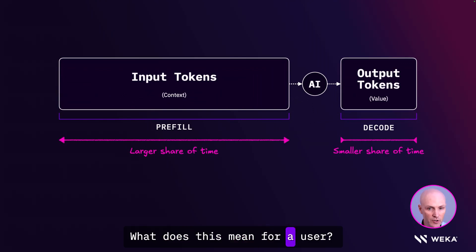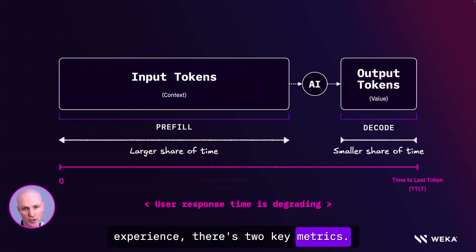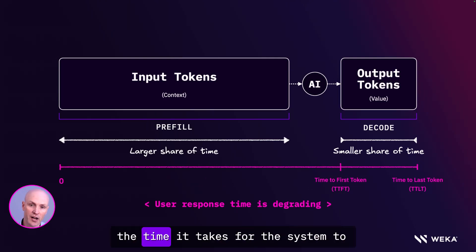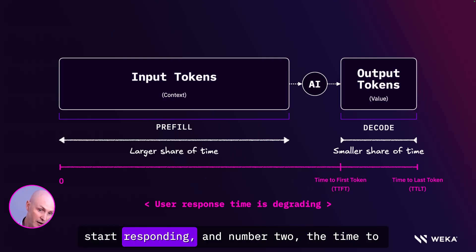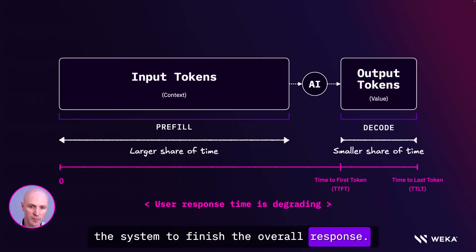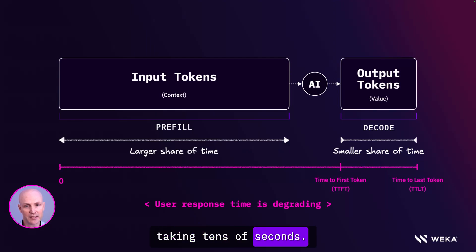What does this mean for a user? Well, other than not the best user experience, there are two key metrics. Number one, the time to first token — the time it takes for the system to start responding. And number two, the time to last token — the time it takes for the system to finish the overall response. In some cases, the pre-fill component is taking tens of seconds.